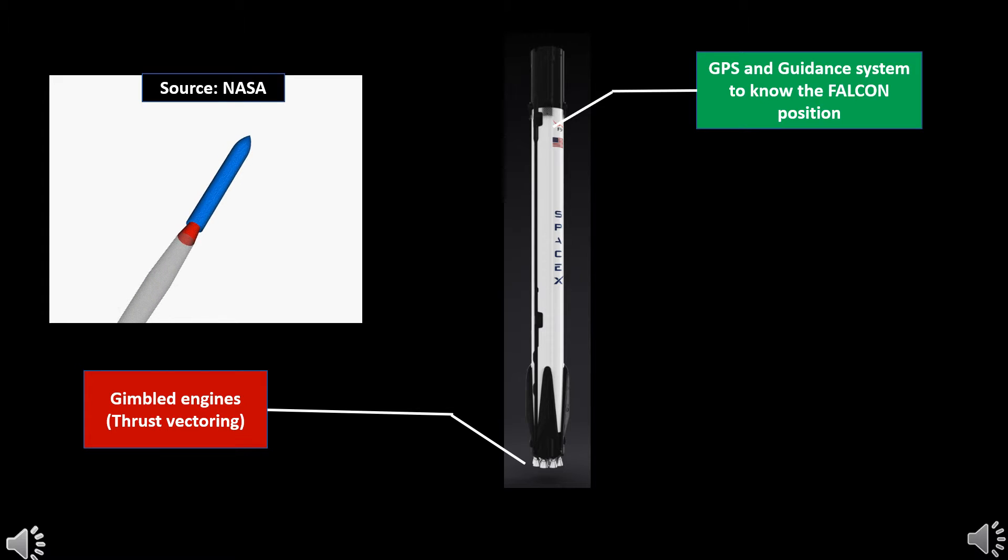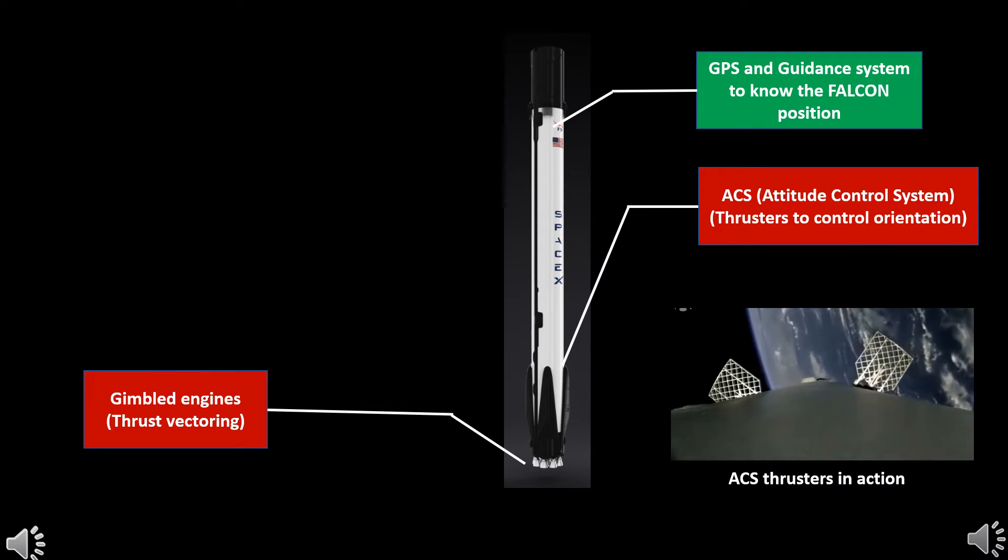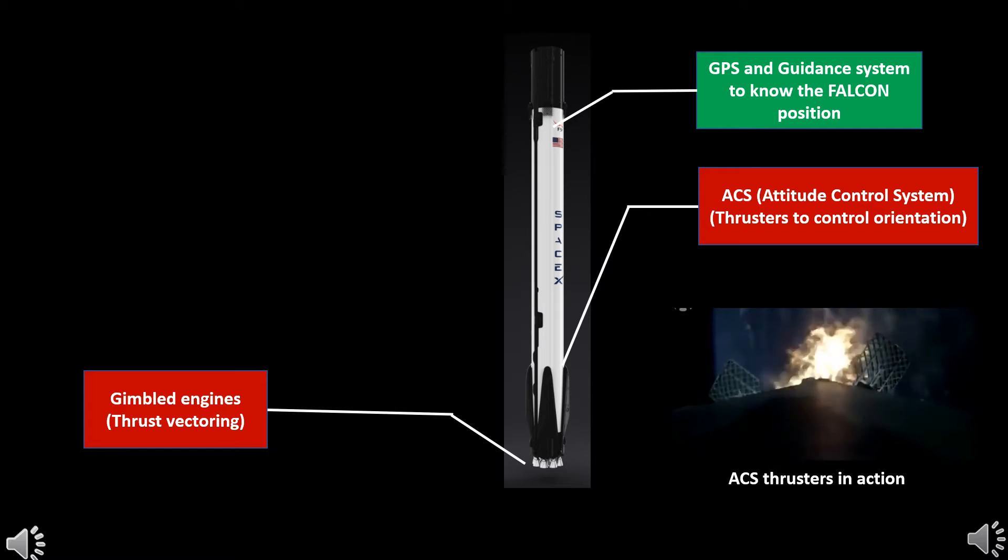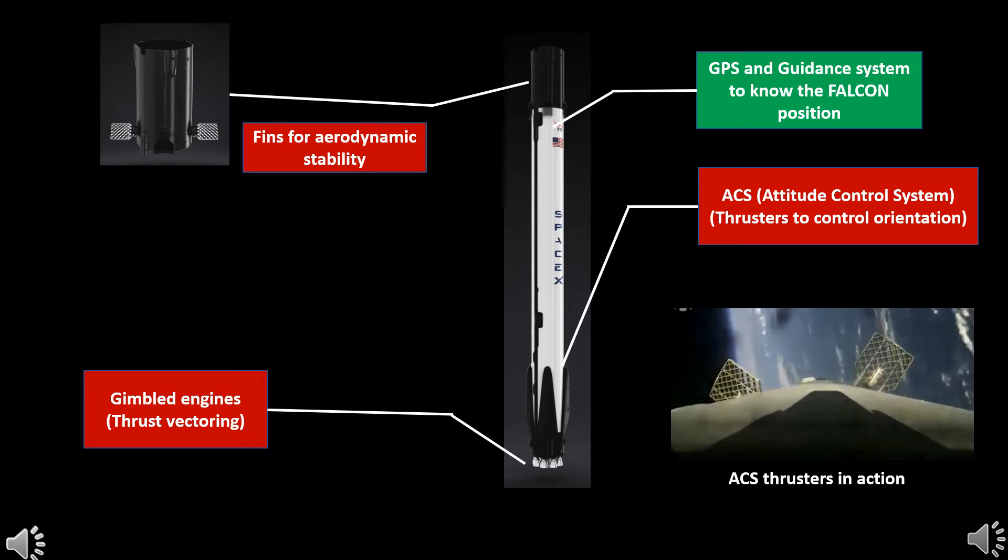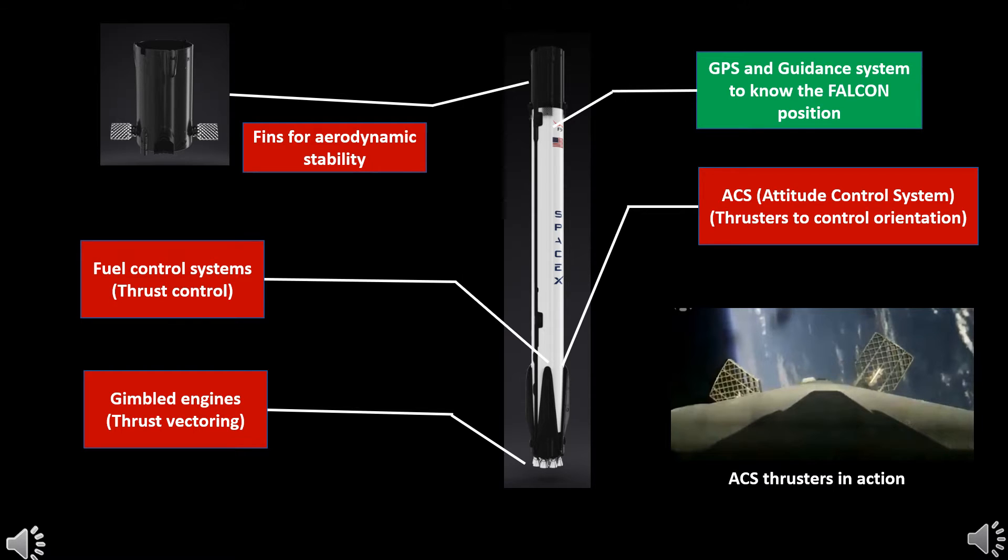The attitude control system ACS has the ACS thrusters on the sides which operate and control the roll orientation of the body. The fins on the top are designed to operate even in hypersonic conditions at higher altitudes, which can be controlled to provide vertical balancing of the Falcon body using aerodynamics. The fuel control system meters the fuel and controls the thrust. The control system used in Falcon is the closed loop control system.